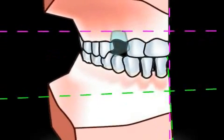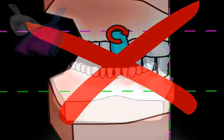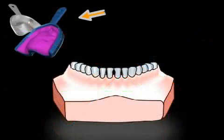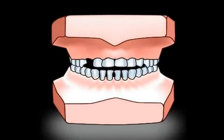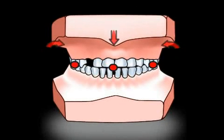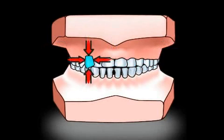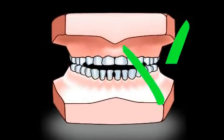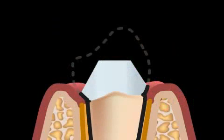The dental prosthesis, shown in blue here, cannot be shaped precisely. A full impression yields complete jaw models, and thus a so-called three-point contact. Therefore, the models cannot be swiveled. It is only then that the technician is able to produce an exact fitting dental prosthesis.